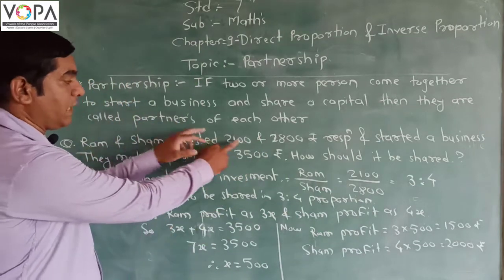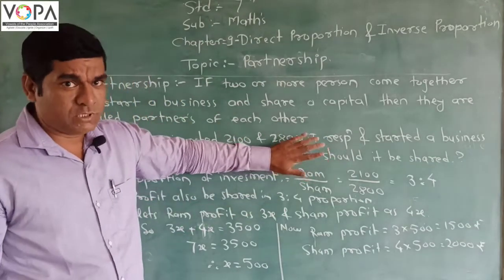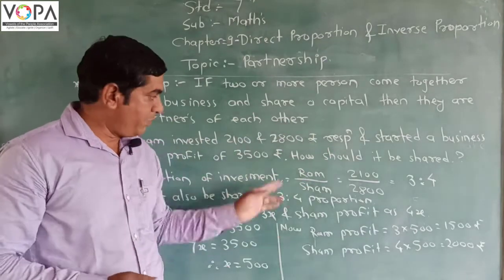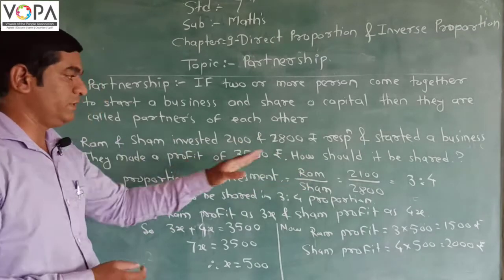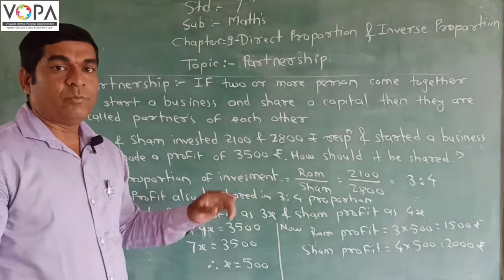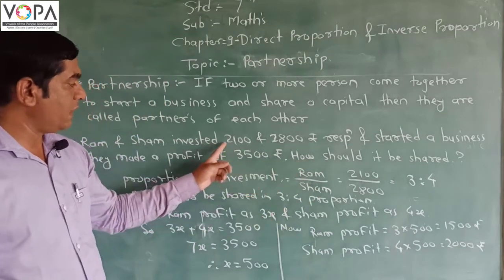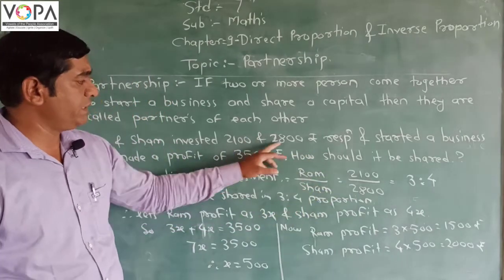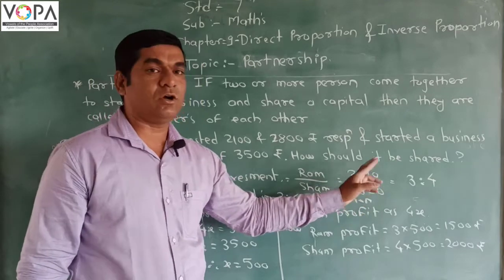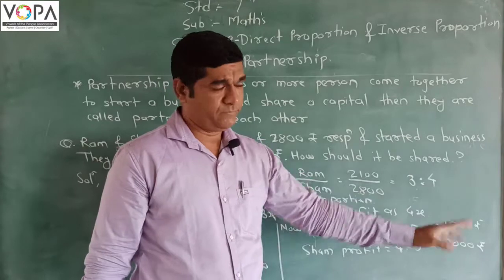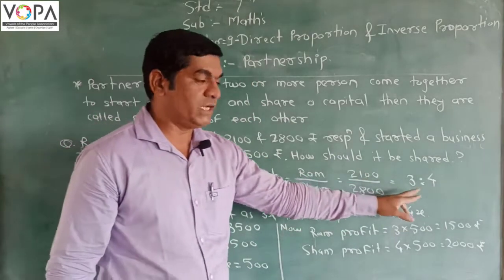In this example, the investment of Ram is 2,100 and the investment of Shah is 2,800. Shah invested more compared to Ram, so the profit will not be divided equally — it will be divided by ratio. First, we find the proportion of investment: Ram's investment is 2,100 and Shah's is 2,800. Dividing both by 700, we get 3 and 4. Therefore the ratio of investment is 3:4, and the profit is shared between Ram and Shah in the ratio 3:4.